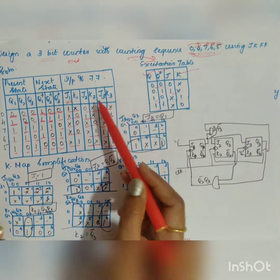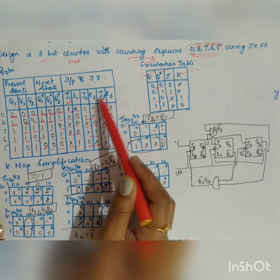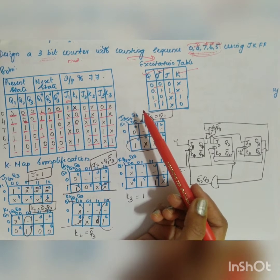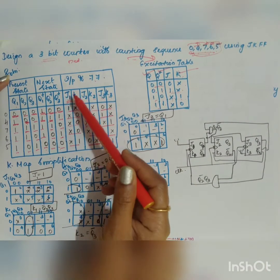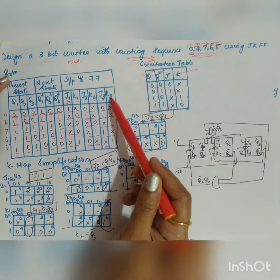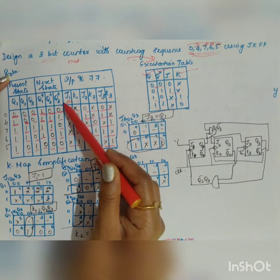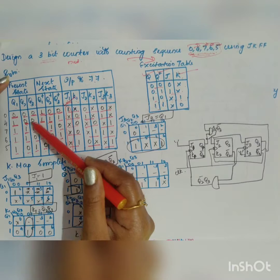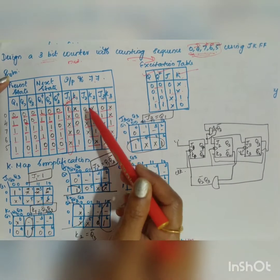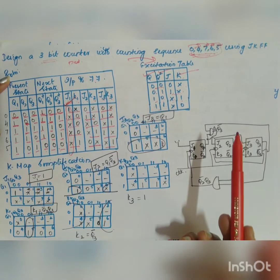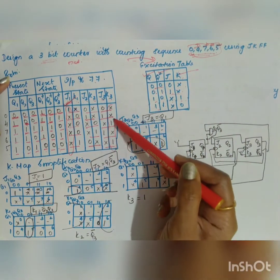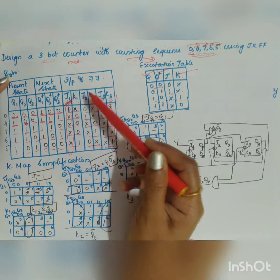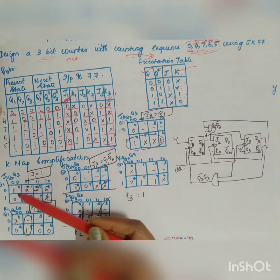Now simplify the flip-flop inputs using K-maps for J1K1, J2K2, and J3K3. Looking at the table, J1 has all don't-care entries plus a 1, and unused states (1, 2, 3) are also don't-cares, so J1 = 1. Similarly, K3 has two 1s and all others are don't-care, so K3 = 1.